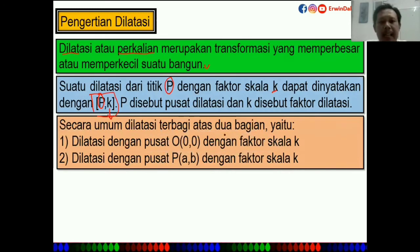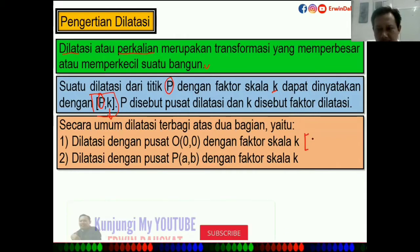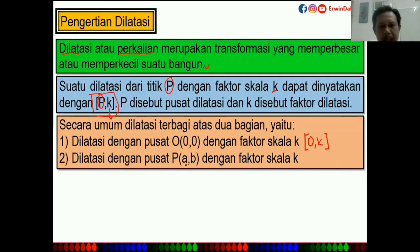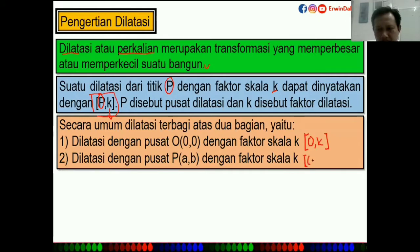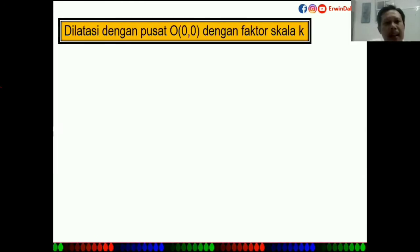Secara umum, dilatasi terbagi menjadi dua. Yang pertama adalah dilatasi dengan pusat (0,0) dengan faktor skala K, ditulis sebagai (0, K). Yang kedua adalah dilatasi dengan pusat P(A,B) dengan faktor skala K, ditulis sebagai (A, B, K). Pertama kita akan mempelajari dilatasi dengan pusat 0 dengan faktor skala K.